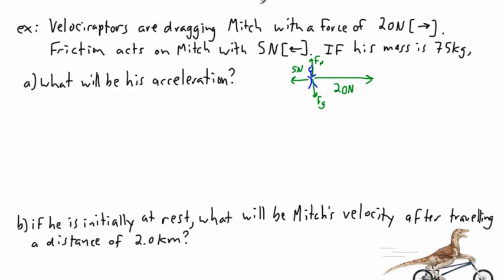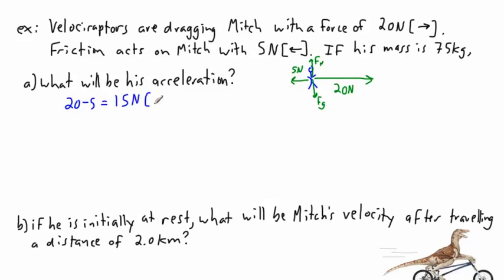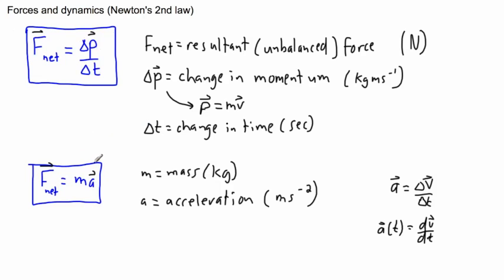The largest force wins. 20 newtons minus 5 newtons gives us 15 newtons to the right. Therefore, F_net equals 15 newtons to the right. It's as if the velociraptor is dragging me to the right with a net force of 15 newtons.